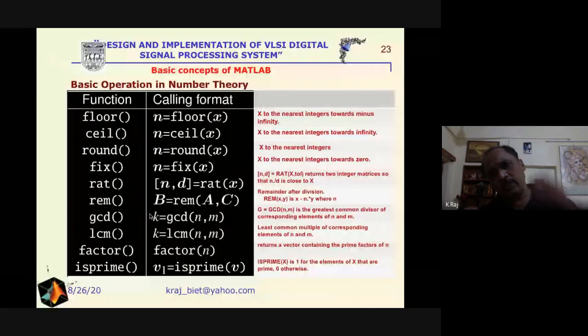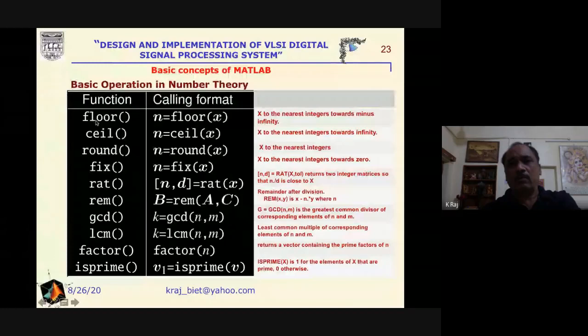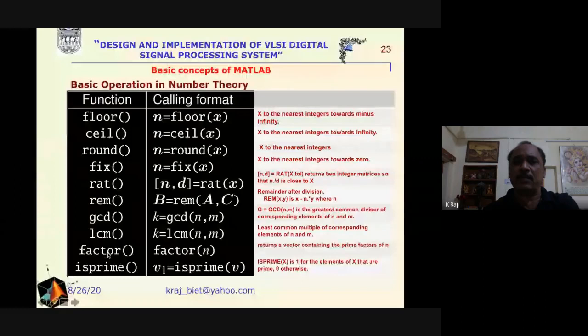For rounding and truncation, different functions are available: floor rounds towards the lower value, ceil rounds towards the upper value, round rounds to the nearest integer, fix truncates towards zero, rem gives the remainder, gcd computes the greatest common divisor, lcm gives the least common multiple, factor gives the prime factors, and isprime checks whether a number is prime.